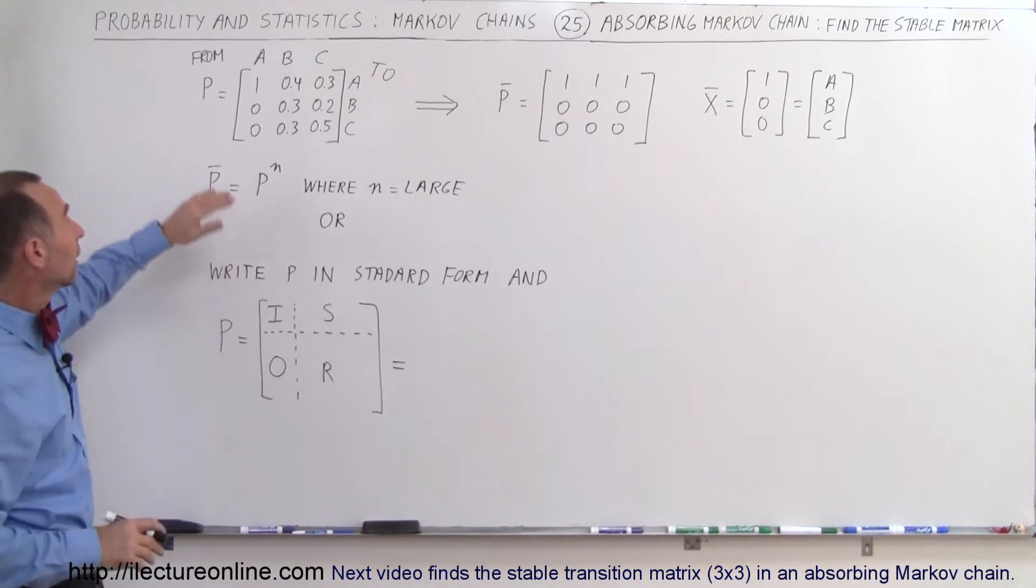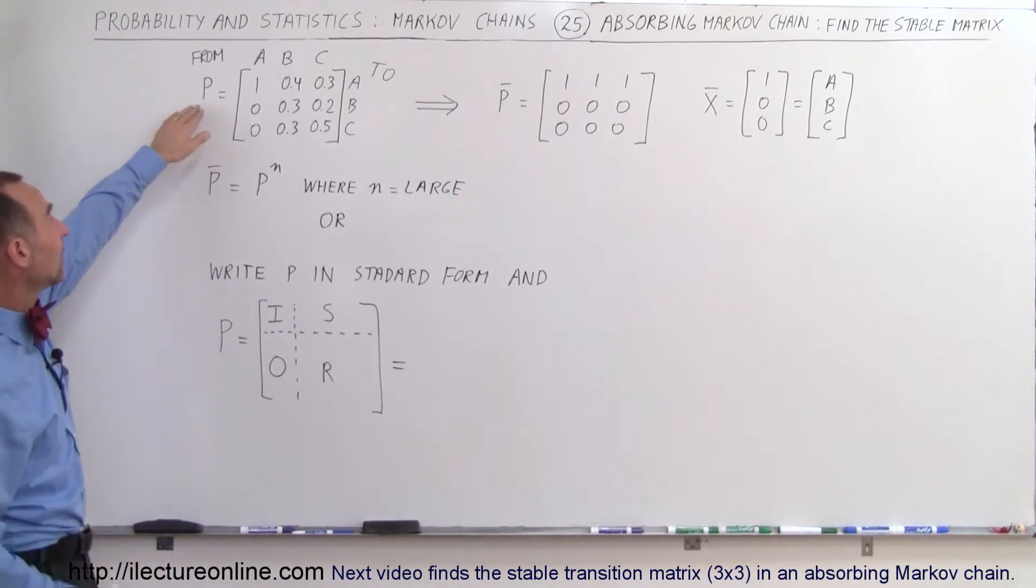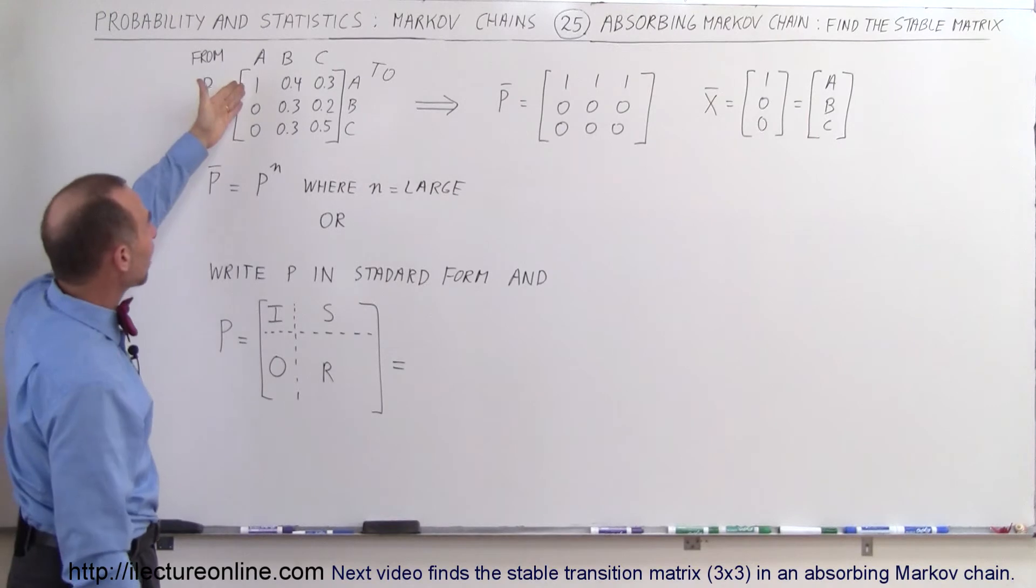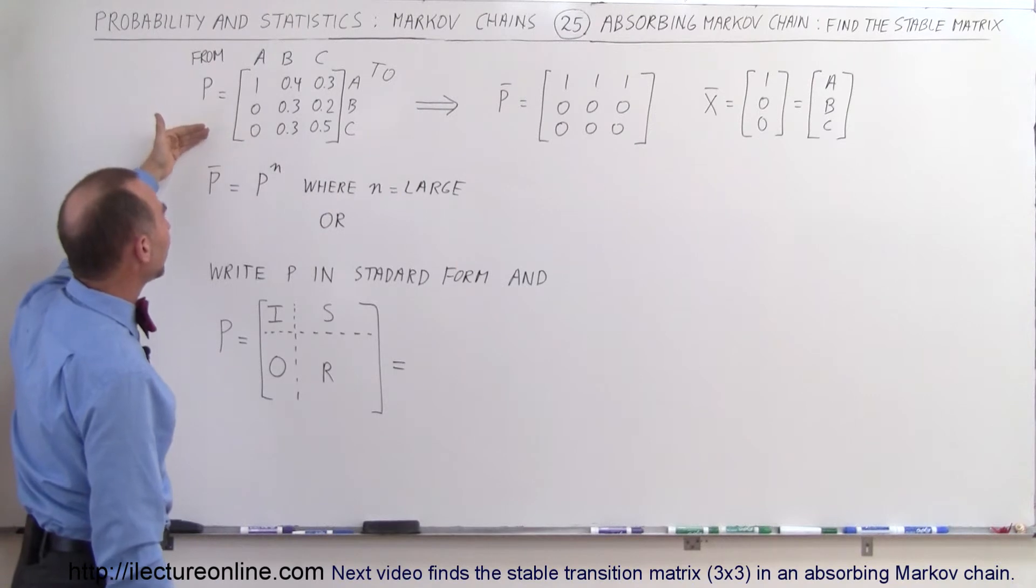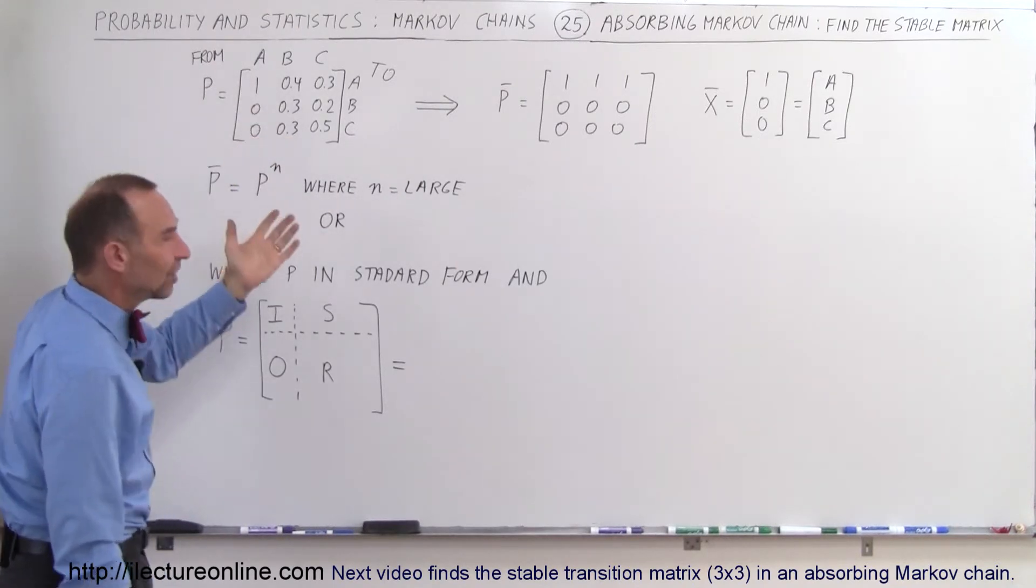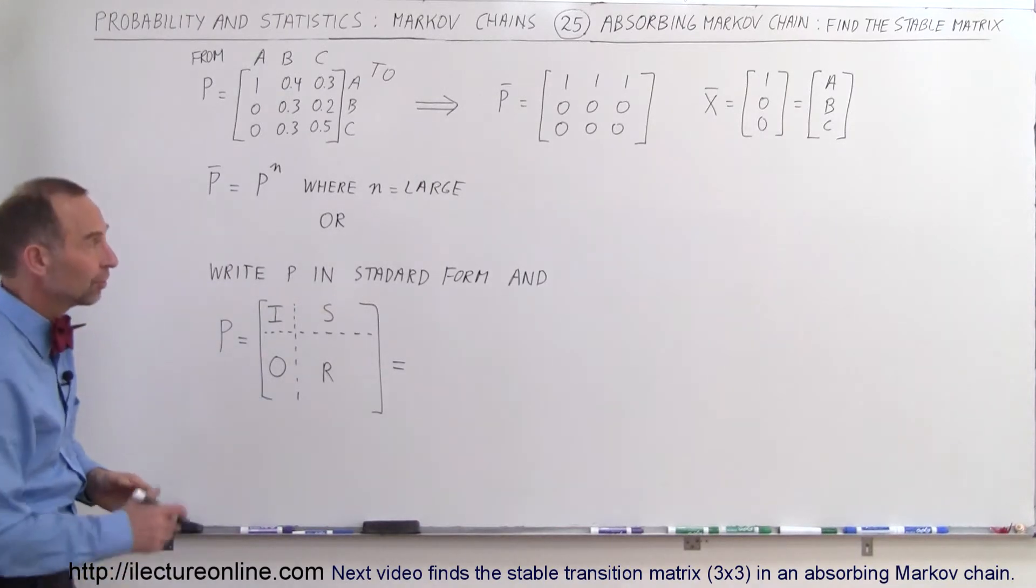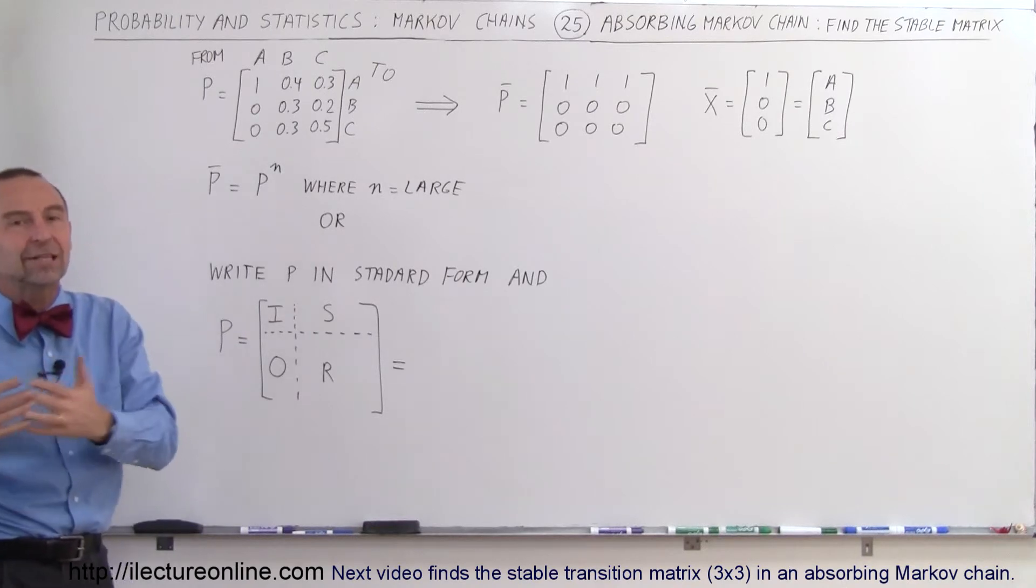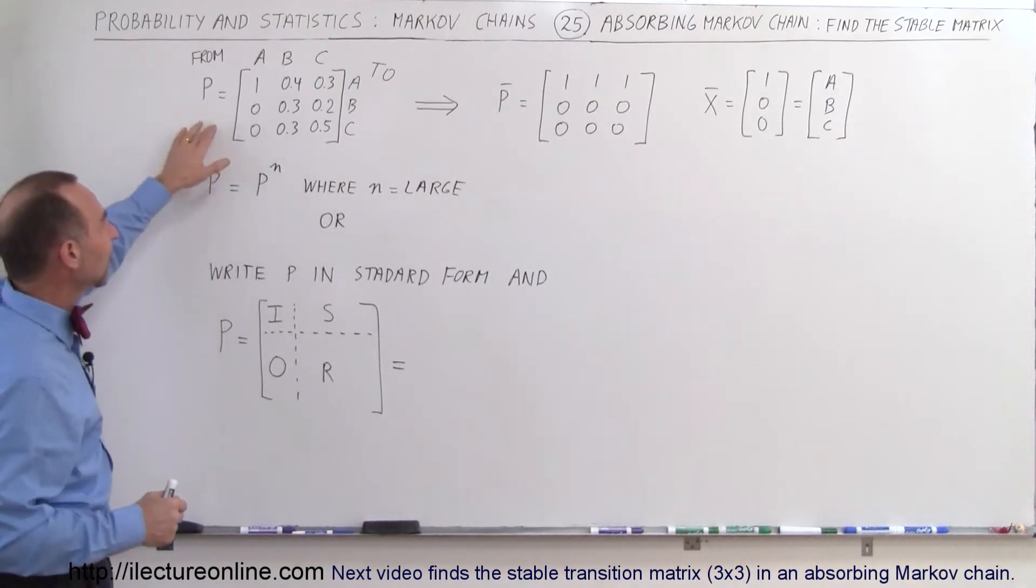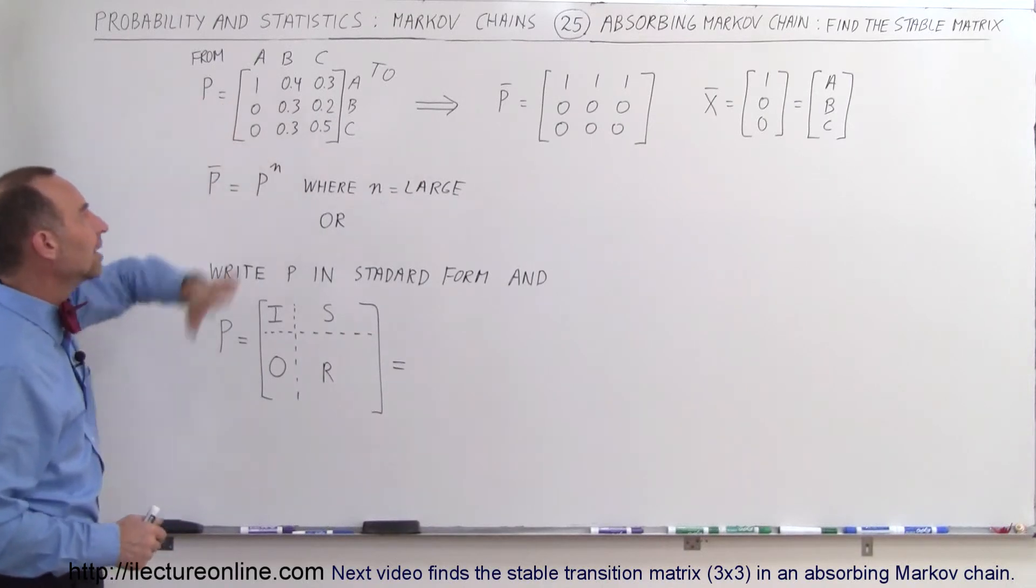An absorbing Markov chain has a transition matrix where we have a column that has a one and nothing but zeros for the other elements, which eventually will result in one of the states having all of the population and the other states having none of the population. Sometimes you can have all the population between two states and none in the other states, but in this case we're going to have one state with all the population and none in the others.